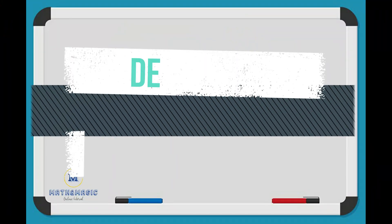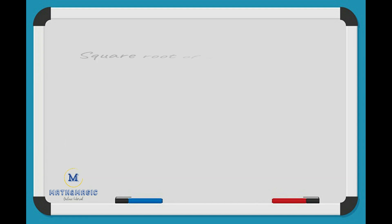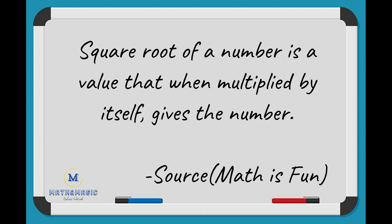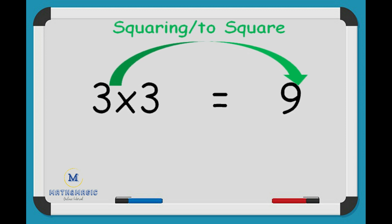Before going to the computation process, let us define it first. Square root of a number is a value that when multiplied by itself generates the number. For example, if you multiply 3 by itself, the product will be 9. This process is called squaring or to square.